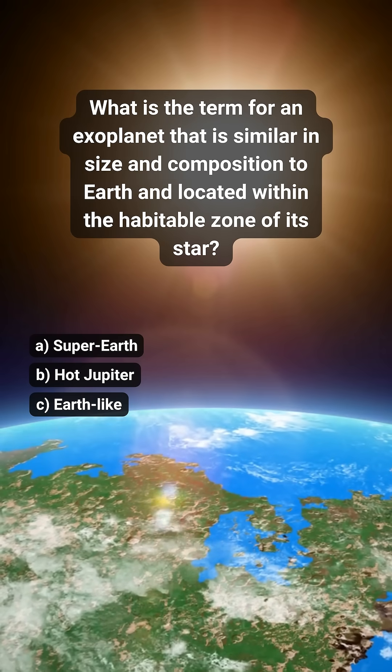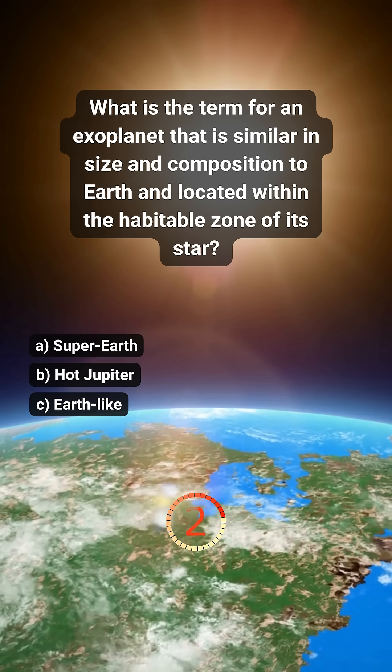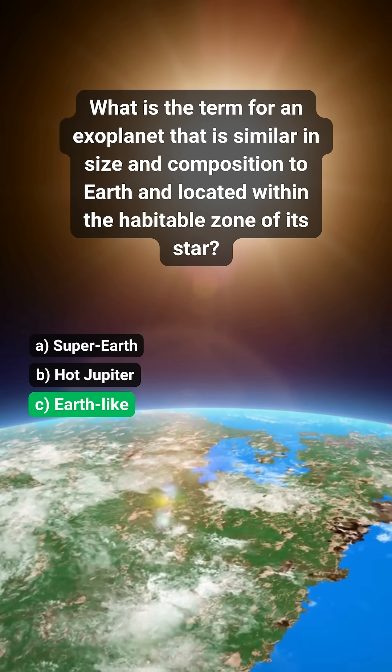What is the term for an exoplanet that is similar in size and composition to Earth and located within the habitable zone of its star? C. Earth-like.